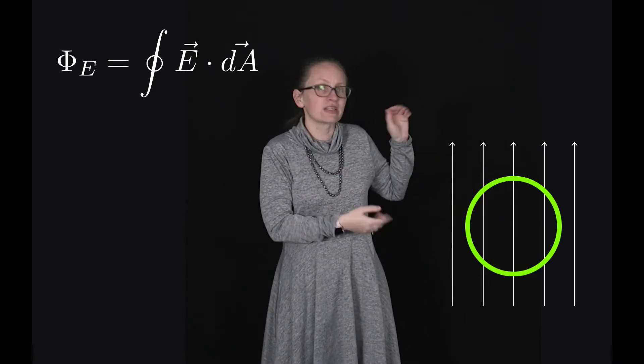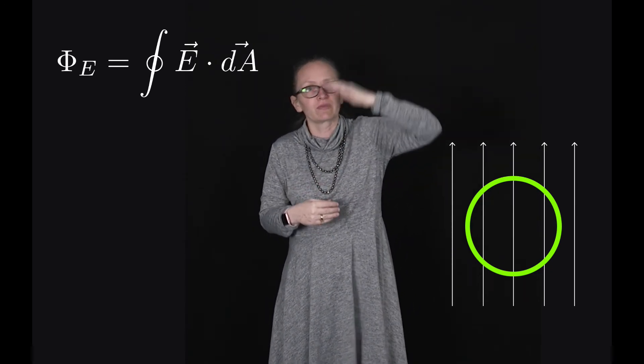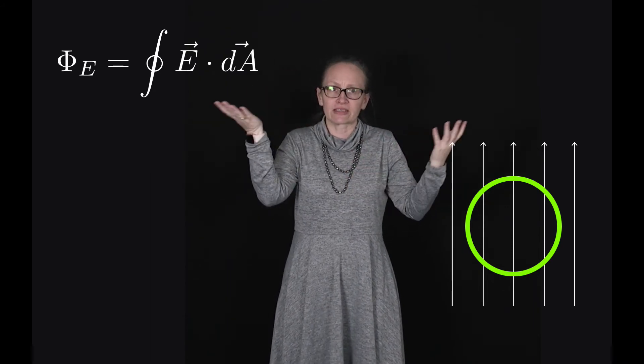Now in this case you can see that every field line which is entering the sphere also ends up leaving the sphere. So these are going to have opposite signs.